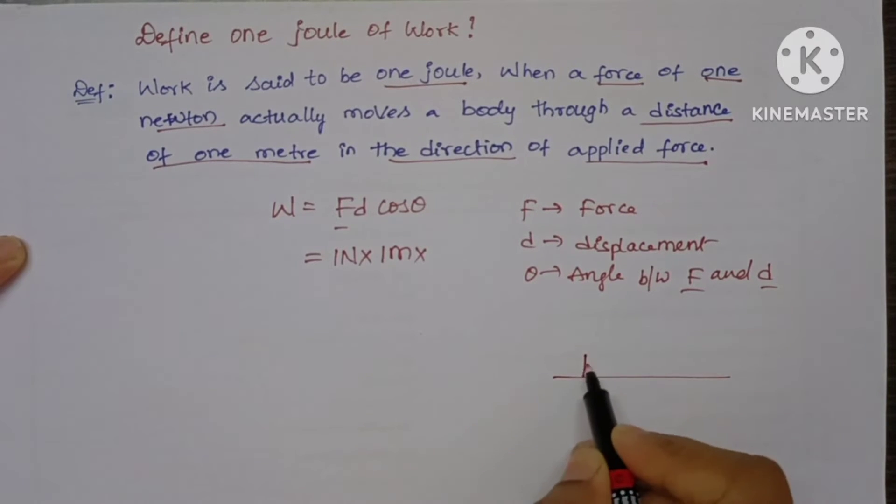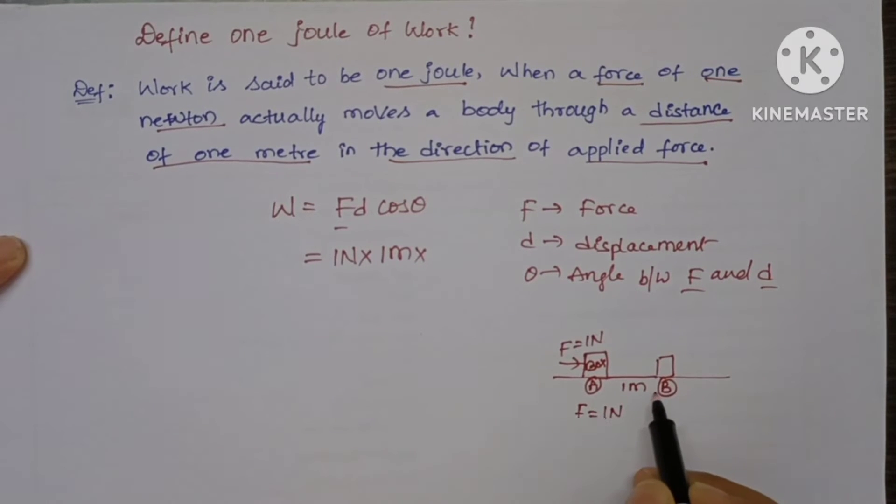Suppose here it is a box at place A, and we are applying a force of 1 newton to move this box through 1 meter to the position B. So here force is 1 newton and it was displaced through 1 meter.